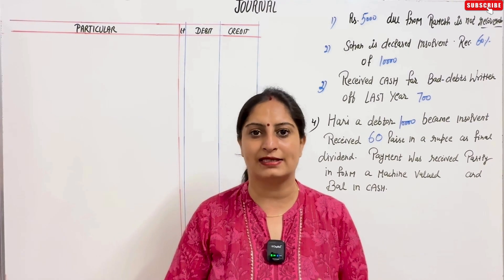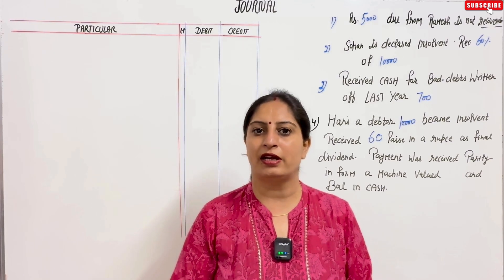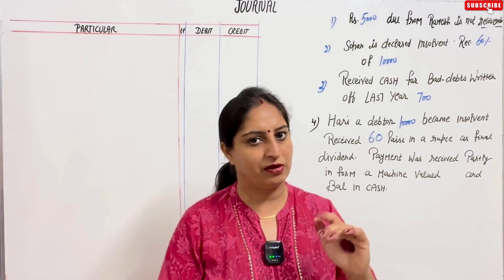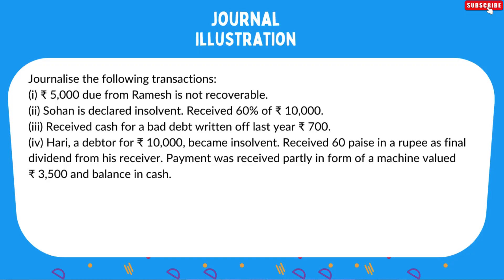When and how do bad debts happen? And how does the debit or credit get done in the journal entry? I am reading the question on the screen. Journalize the following transactions. You have four equations. Number one: Rs. 5,000 due from Ramesh is not recoverable. Sohan is declared insolvent — received 60% of 10,000. Received cash for bad debts written off last year at 700. Last equation: every debtor of Rs. 10,000 becomes insolvent, received 60 in Rs. as a final dividend from his receiver, payment received partially in former machine value 3,500 and balance in cash.